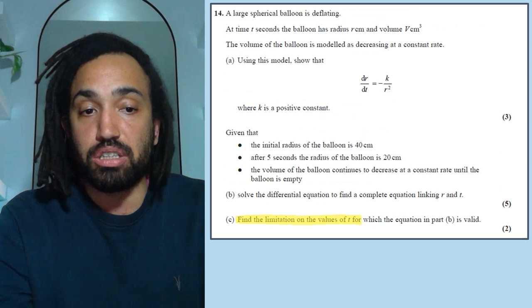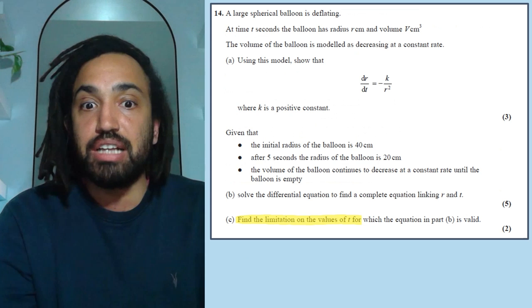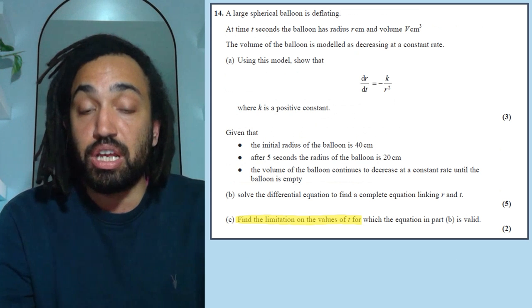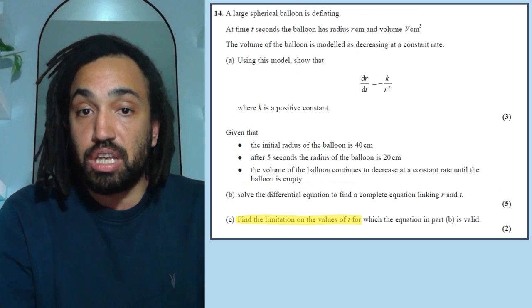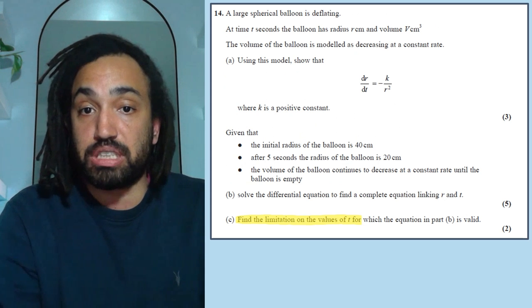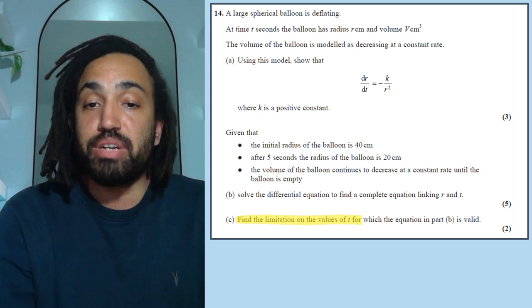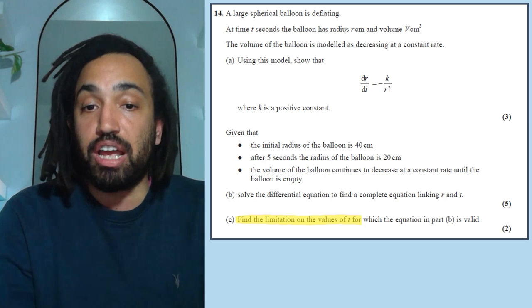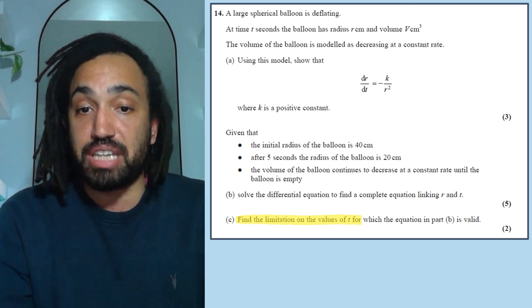And moving on, next question, it asks us to find the limitations of the values of t. Now, if I'm trying to find a limitation, I'm trying to look for the values of t where the model fails. So if I read the context of the question, we have a balloon which is deflating. And obviously, a balloon's radius cannot be negative. So we need to solve to find the time at which the radius becomes negative. And that is therefore a limitation of the model.